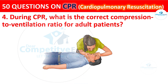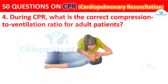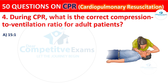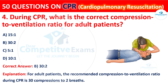Question 4: During CPR, what is the correct compression to ventilation ratio for adult patients? Your options are: 15:1, 30:2, or 5:1. The correct answer is B: 30:2. For adult patients, the recommended compression to ventilation ratio during CPR is 30 compressions to 2 breaths.